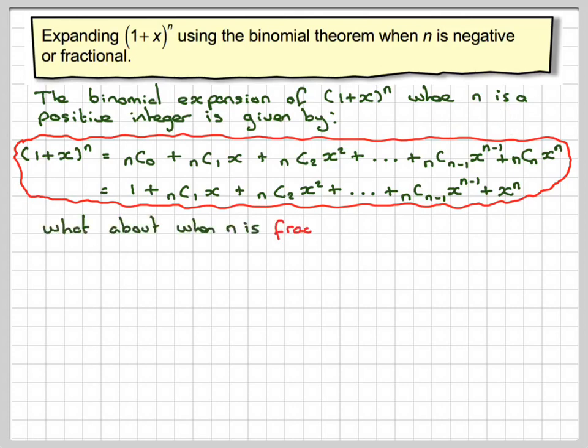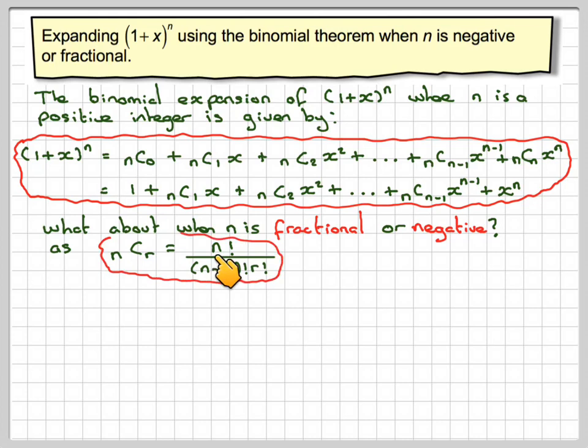What about when n is fractional or negative? nCr is defined as n!/(n-r)!·r!, which will have no meaning if n is a fraction or a negative number.